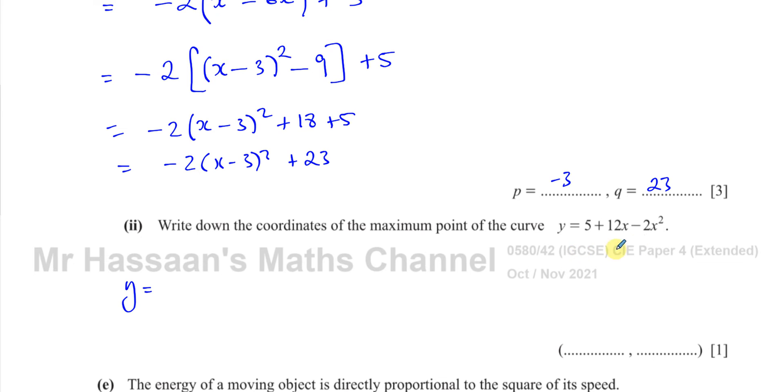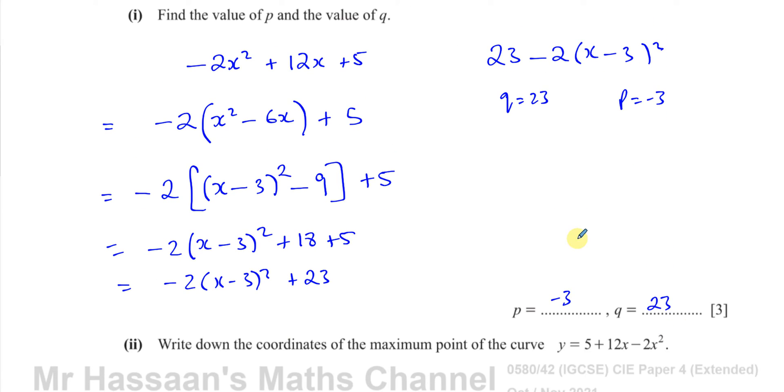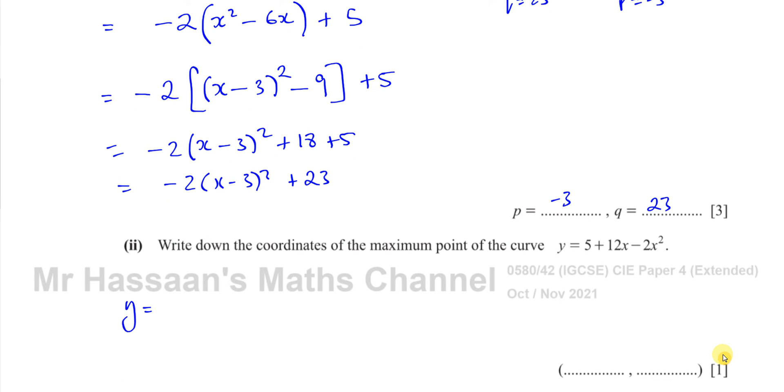So we end up with y equals. Now, if I see this is exactly the same as what we had here. 5 + 12x - 2x². You have to make sure it's the same. So this is going to be the same as what we've written here. So it's going to be 23 - 2(x - 3)².